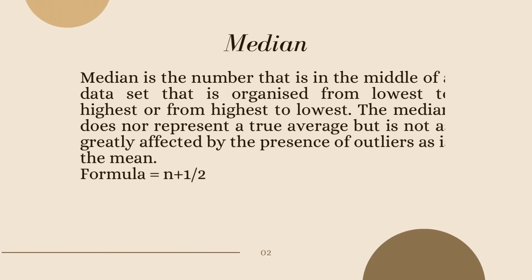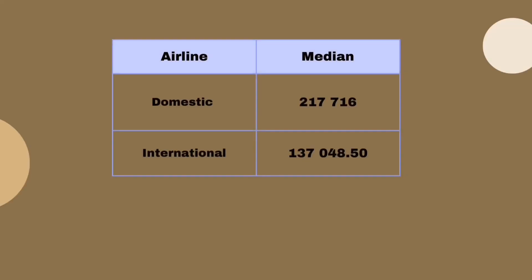Next, we need to find the median for the domestic and international airline datasets. Median is the number in the middle of a dataset organized from lowest to highest or highest to lowest. The median does not represent a true average, but it is not as greatly affected by the presence of outliers as the mean. The formula is (N + 1) divided by 2. After the calculation, the median for the domestic airline is 217,716, while the international airline is 137,048.50.